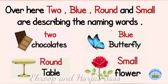Over here, two, blue, round, and small are describing the naming words. Words used for number, color, size, and shape are describing words.